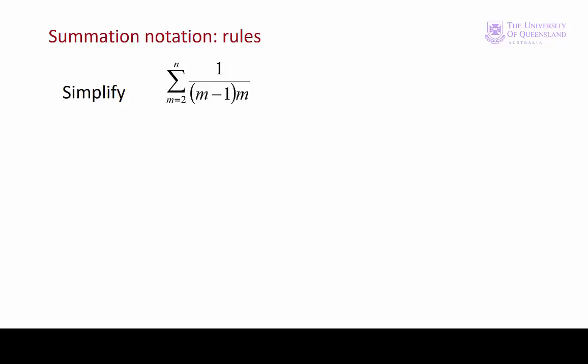Here we have the sum from m equals 2 to some arbitrary number n of 1 over (m minus 1) times m. This could be a complicated problem to evaluate. Let's see if we can simplify it using the rules of notation.